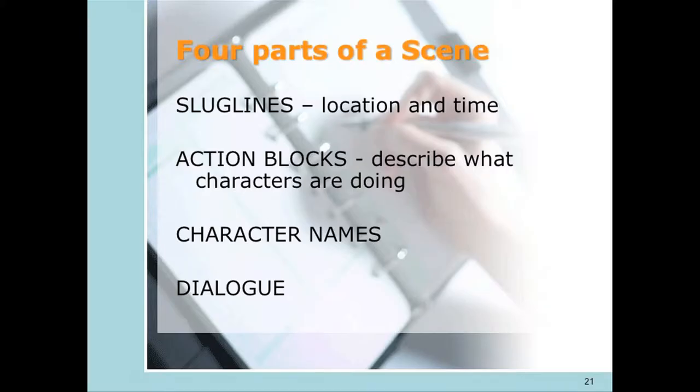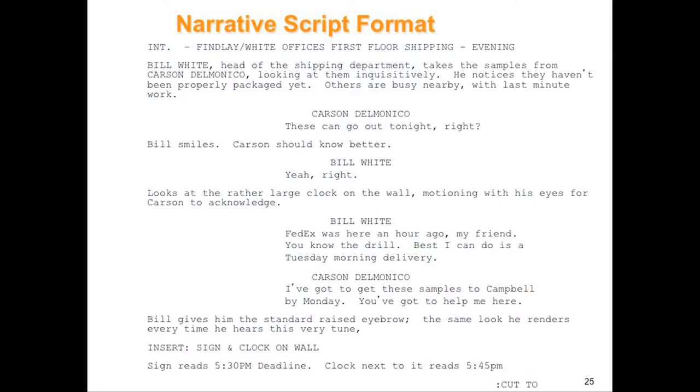These are the four major parts that make up a scene: slug lines, also known as scene headings, which provide information about the location and the time a scene takes place; action blocks, which describe what the characters physically do in the scene; character names, so that the actor knows which character is speaking; and of course, the dialogue — the spoken words performed by the actors.